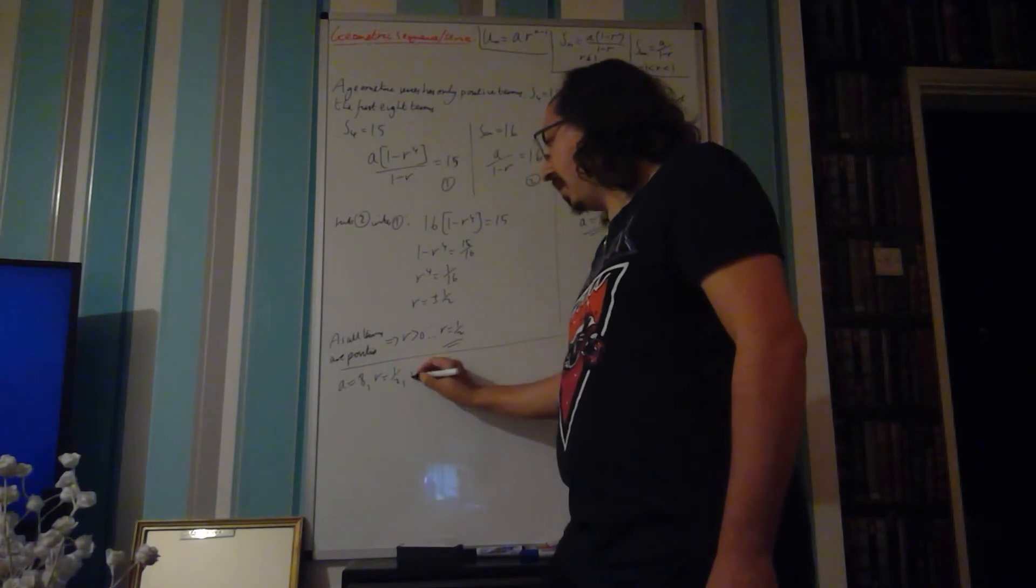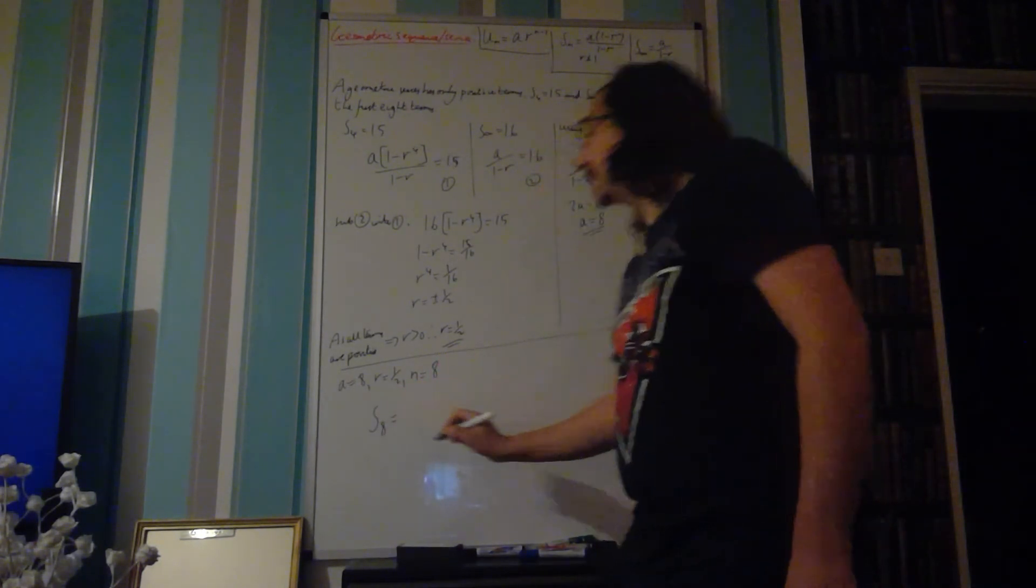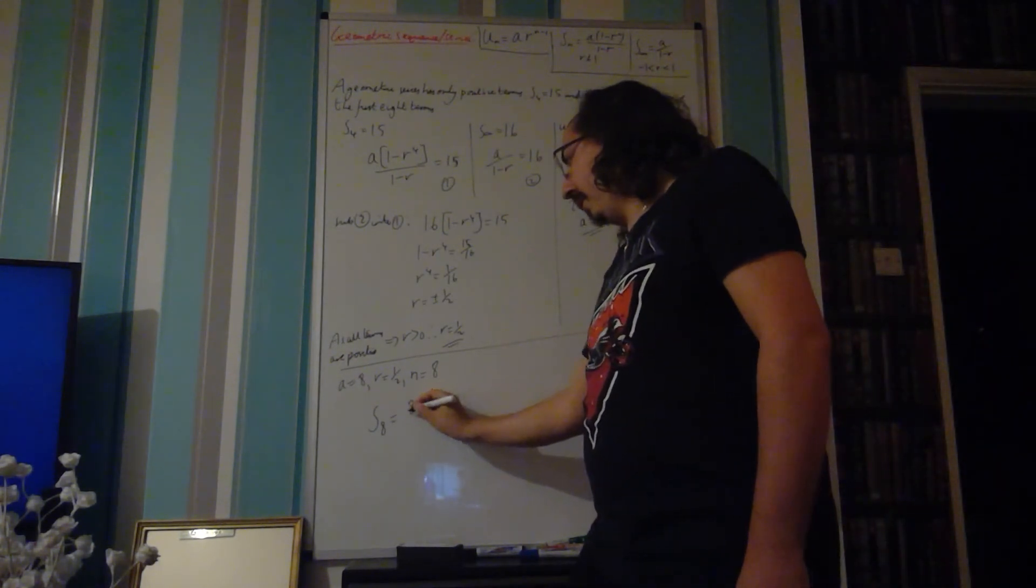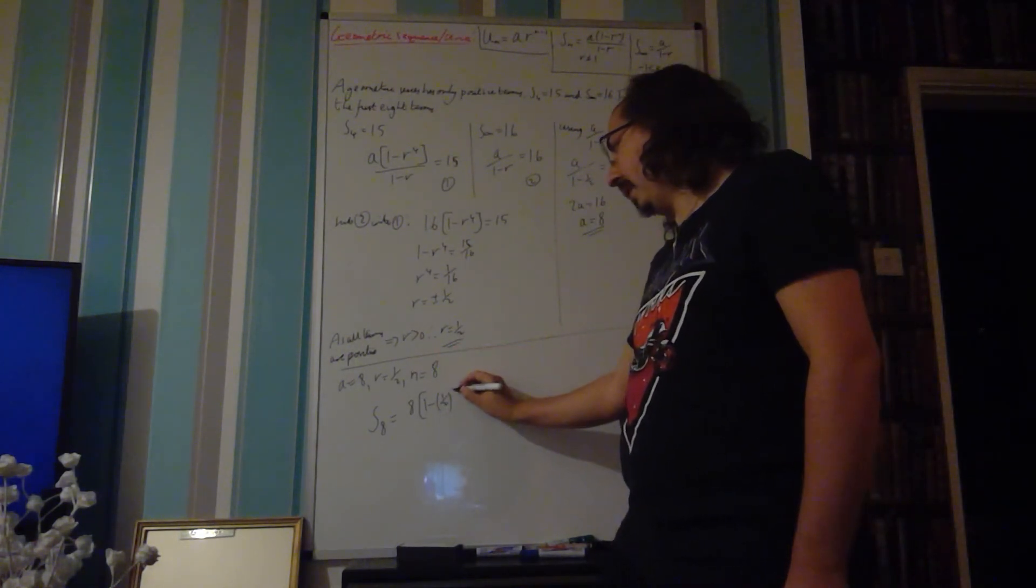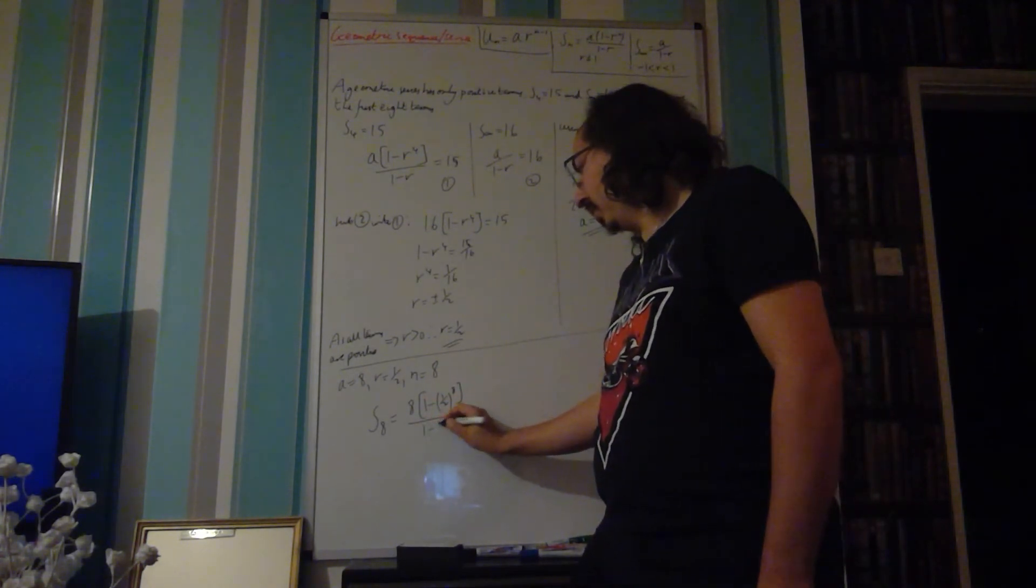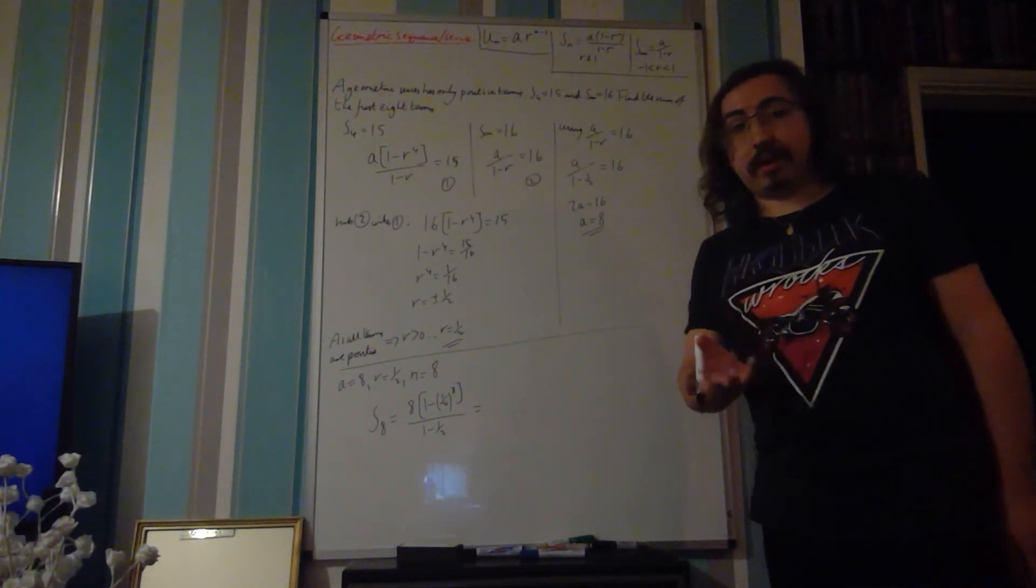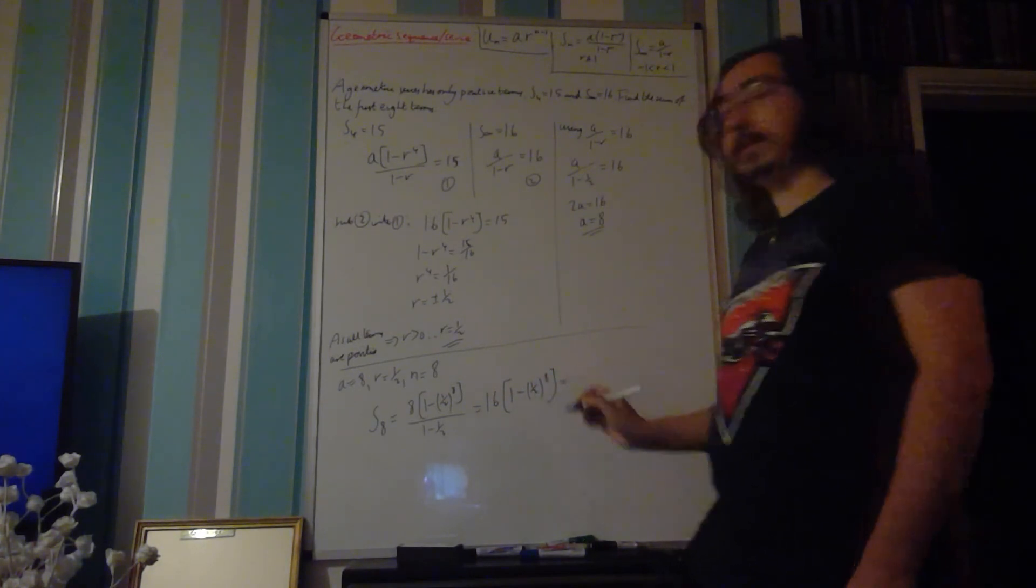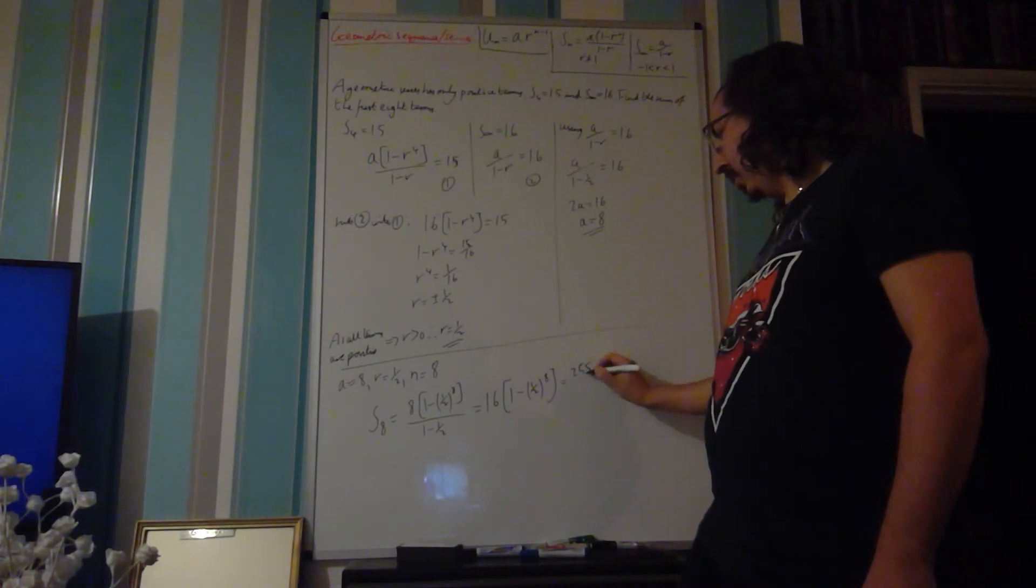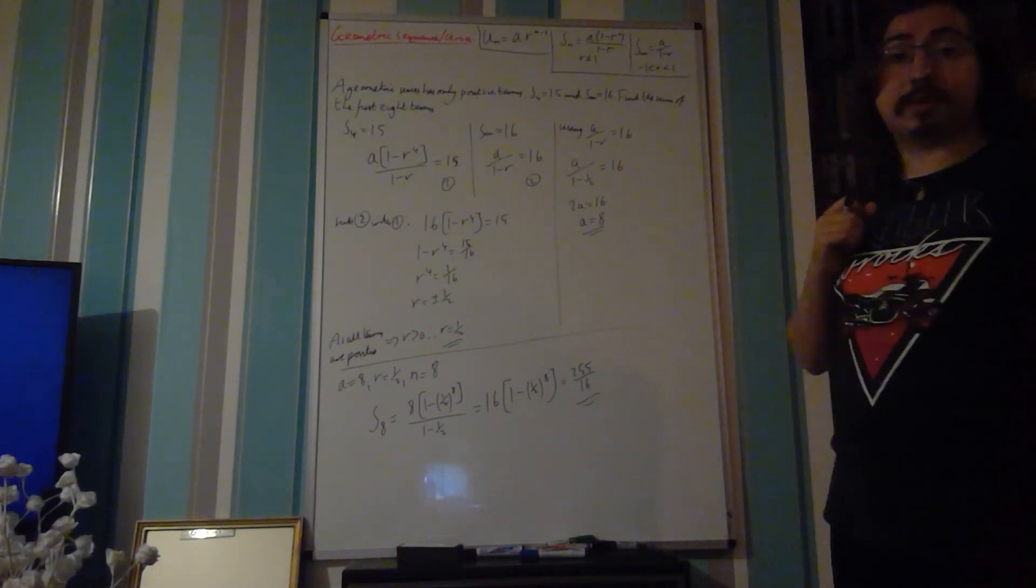n equals 8, so s8 equals 8 times 1 minus our r value which is a half to the power of 8, all over 1 minus a half. 1 minus a half is a half, and 8 divided by a half becomes 16. So you get 16 times 1 minus a half to the 8, which if you put into your calculator you end up with 255 over 16, which is your exact value. That's how we tackle this problem.